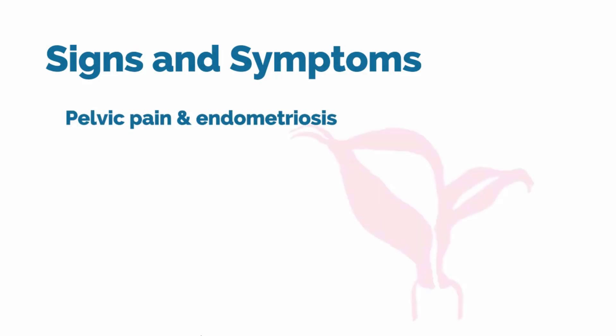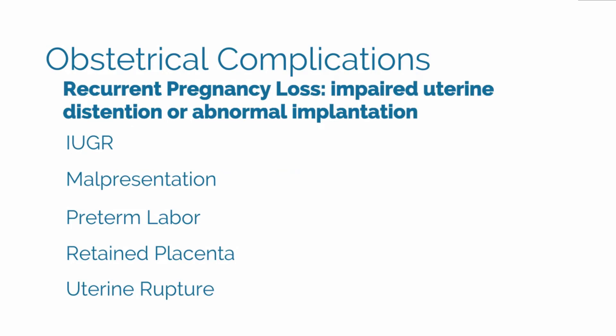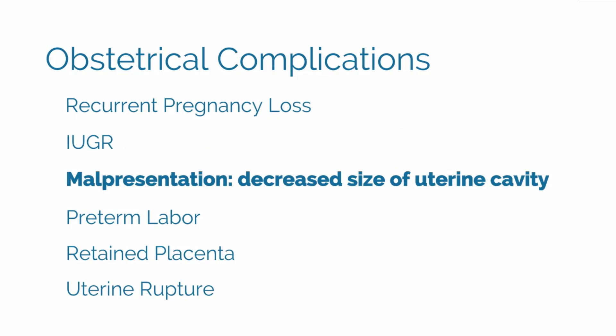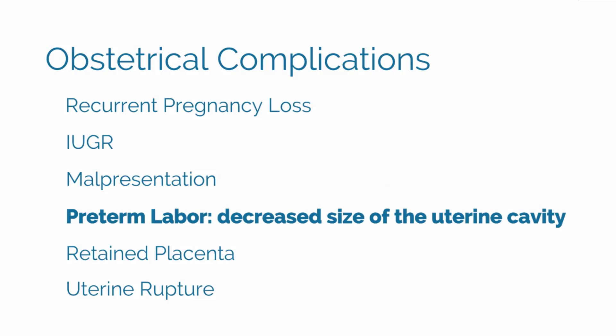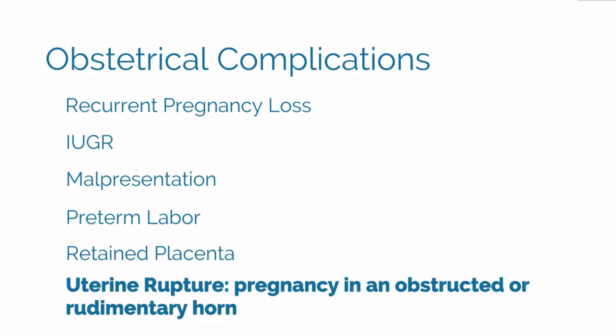Like our patient, many women are asymptomatic, and symptoms can vary greatly depending on the defect. Some women will present with pelvic pain, either cyclic or non-cyclic, and can develop endometriosis if there is a non-communicating functioning horn, which can seed the peritoneum through retrograde menstruation. Women can present with menstrual abnormalities including minimal bleeding or amenorrhea with agenesis. Obstetrical complications include recurrent pregnancy loss due to impaired uterine distension or implantation on a septum with decreased vascularity; intrauterine growth restriction secondary to abnormal uterine blood flow; malpresentation due to a decreased uterine cavity size; increased preterm labor; retained placenta when partially trapped in a narrow uterine horn; and rarely, uterine rupture from pregnancy in an obstructed or rudimentary horn.